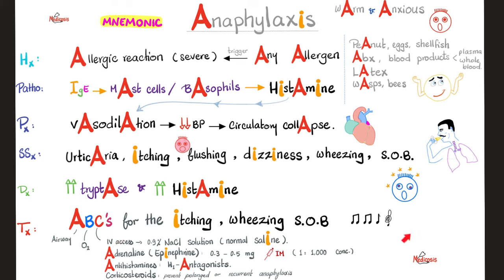Some pearls for the pros: if the patient is on a beta blocker — a drug that blocks beta receptors in the heart — when you give epinephrine you're trying to stimulate the beta-1 receptor in the heart, but it's blocked. So your epinephrine will not be very effective in raising blood pressure and reversing the shock. What should you do? Give the antidote to the beta blocker. What's the antidote to the beta blocker? Glucagon. Why is glucagon the antidote to a beta blocker? Please refer to my videos on insulin versus glucagon in my endocrinology playlist.